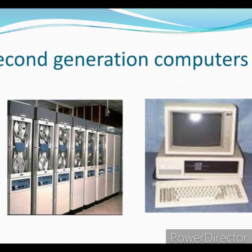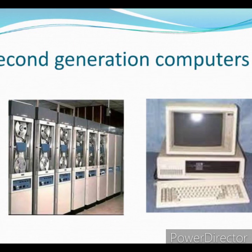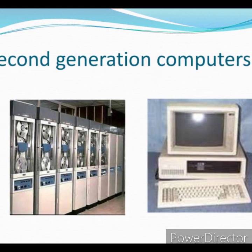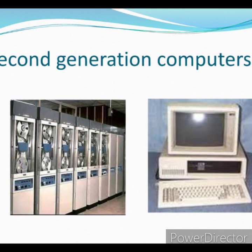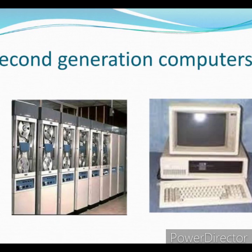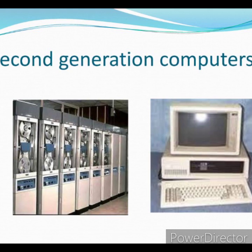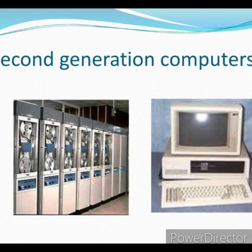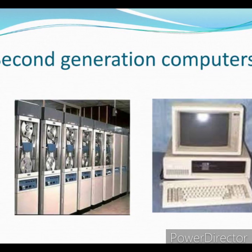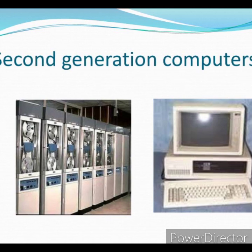The second generation computers used assembly language, which made it possible to create programs for performing tasks. Some of the programming languages that came into existence during this generation were COBOL, BASIC, and FORTRAN. These computers were smaller, more efficient, faster, cheaper, and used less energy. For example, IBM 1920 and IBM 1401.